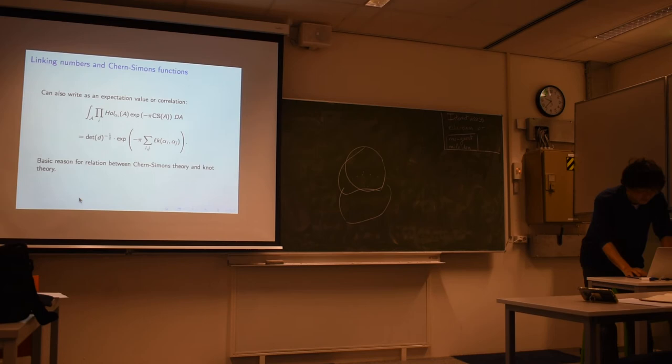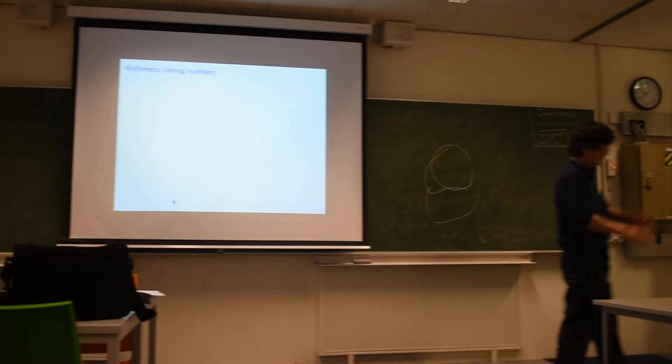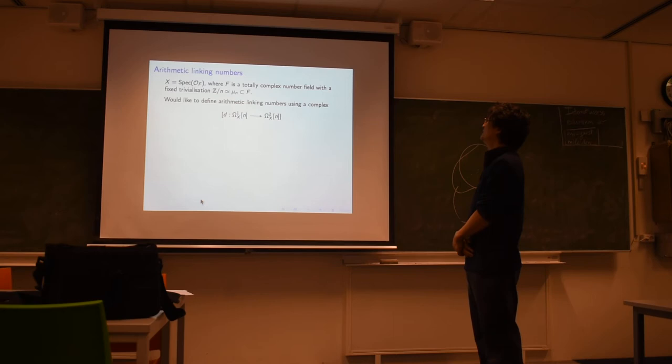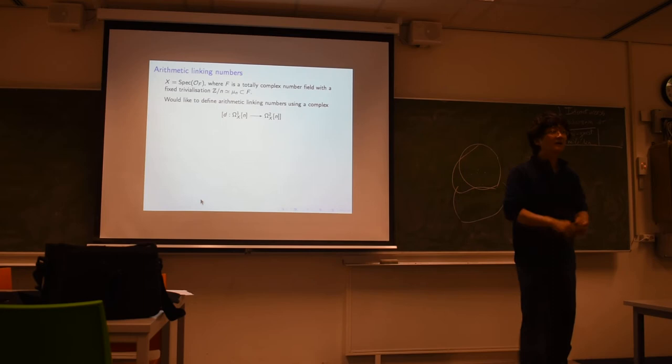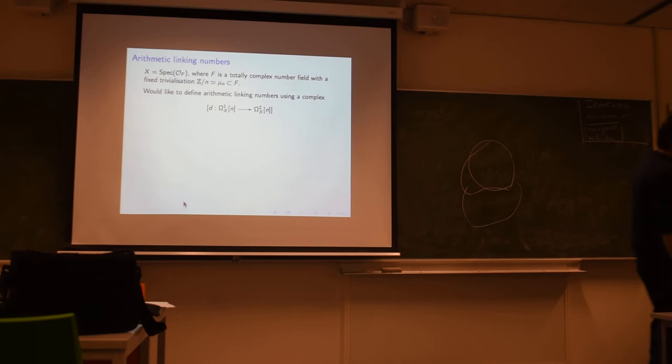Now I thought I would describe very briefly an arithmetic version of this discussion. As I said, many of these things are based upon previous work that Professor Morishita did, but maybe from a slightly different point of view. So X is the Spec of some ring of integers inside a totally complex number field, and I'll assume that we've trivialized the roots of unity. There are places where you have to be delicate about this choice, but I'm going to be completely sloppy in this talk and just freely identify roots of unity and Z mod n as we go along.